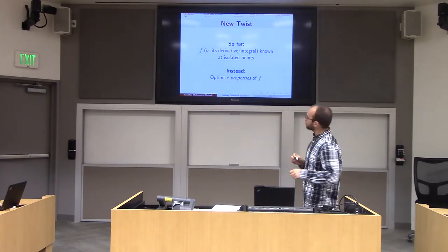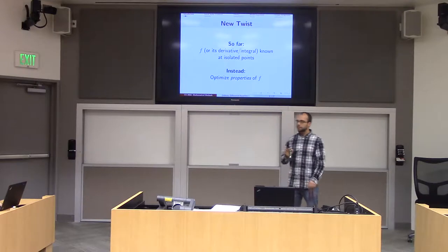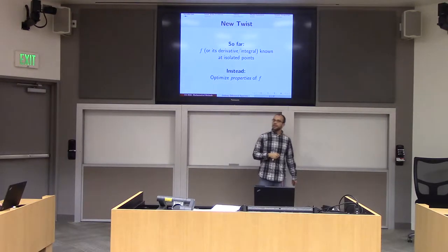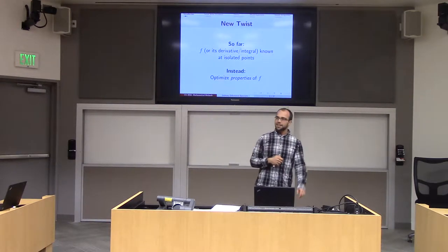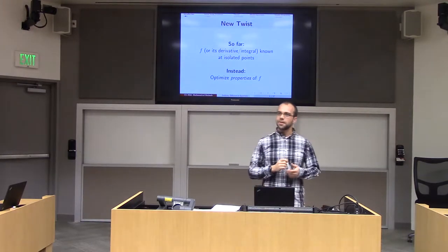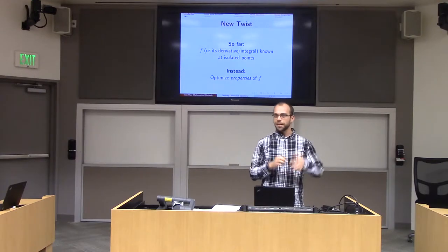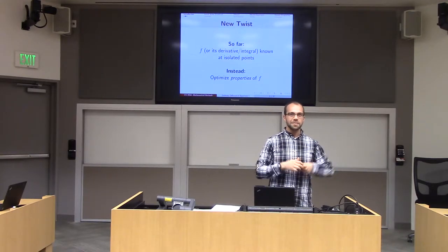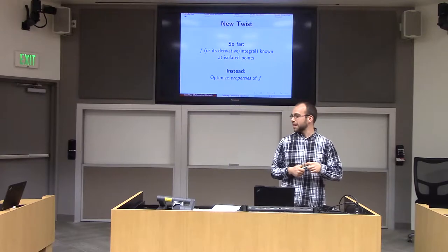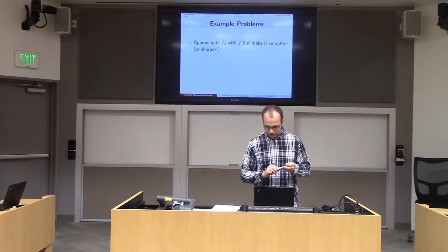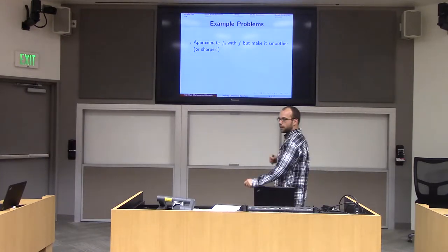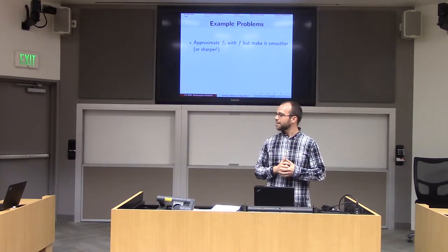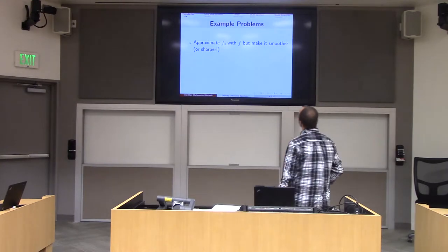But today, we're going to have a new twist, and rather than simply kind of filling in missing information, we're going to say, what if we write down some properties that we'd like f to have? And if we can write down these properties, now we want to optimize an f to satisfy this. This is sort of similar to the problems that we've already designed. When we did least squares, we said we wanted to find a point that satisfies Ax equals b as well as we can. So that was a property of x that we liked, and then we satisfied it in some nice sort of energy way, and now we're going to do basically the same thing with a function.